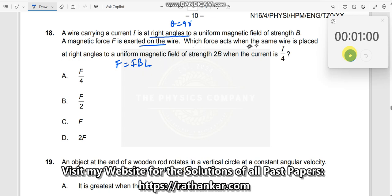Which force acts on the same wire when the wire is placed at right angles, again right angles, to a uniform magnetic field of 2B, and the current is i by 4?